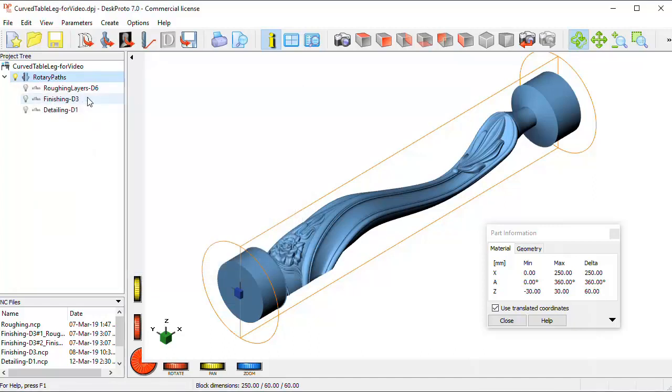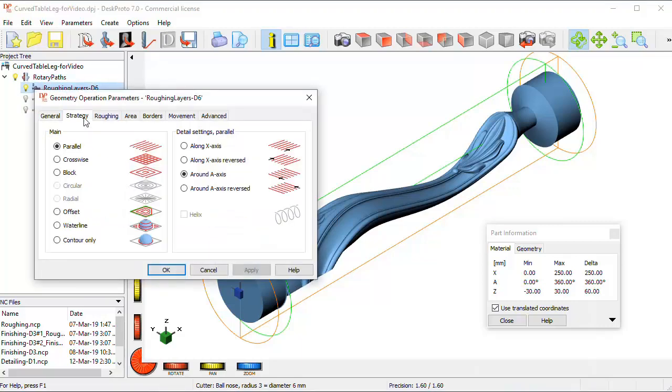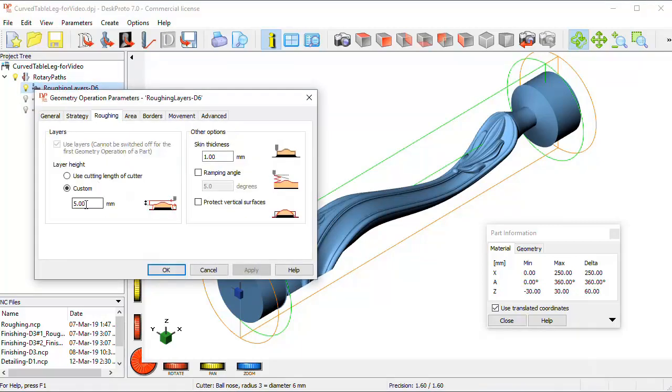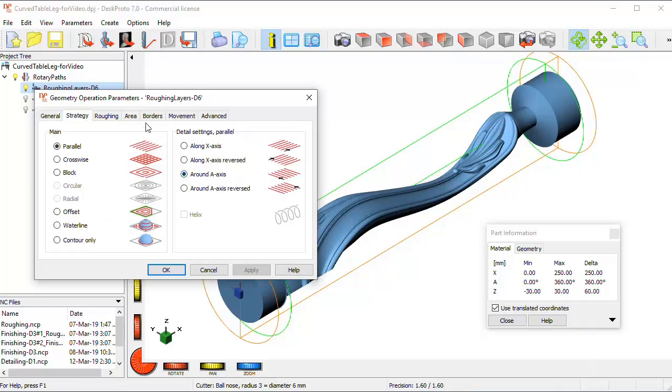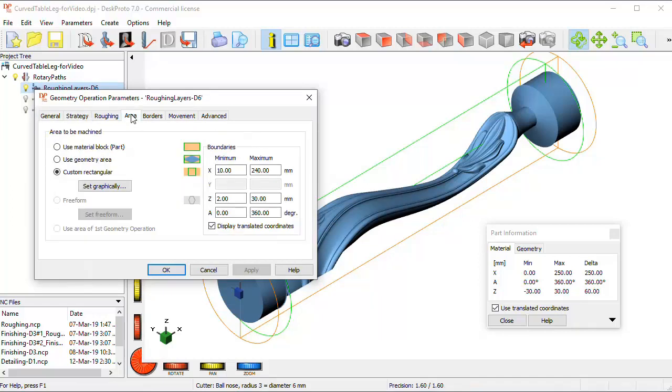We have three operations. First, the roughing operation. We go down in a number of layers, 5 mm each. We set skin, it's a 6 mm ball-nose cutter. Strategy is round A. The area has been made a bit smaller, as I do not want my cutter to come near the rotary table.